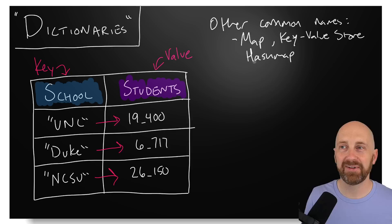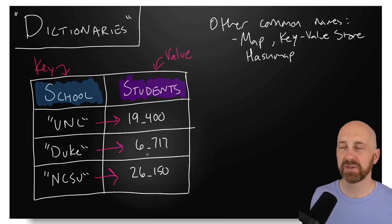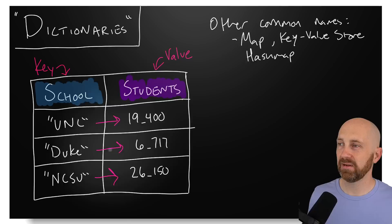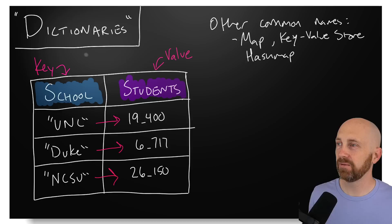If you hear someone talking about a 'map' in Java, they're talking about a dictionary in Python — a very similar concept. So we've got a high-level understanding that we have keys associated with values. Let's assume this dictionary is associated with a variable named 'schools' and look at how we represent it in Python.